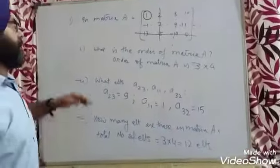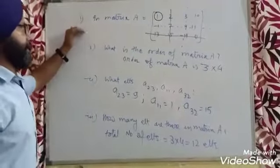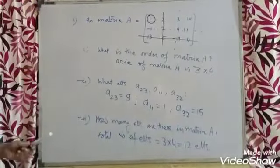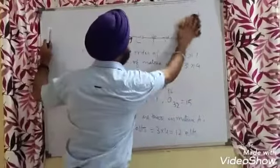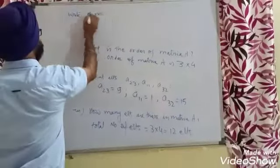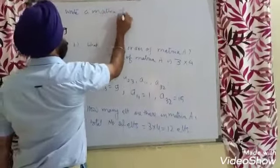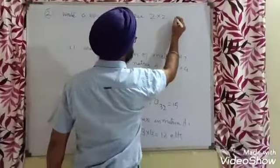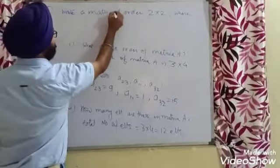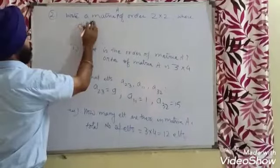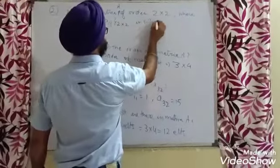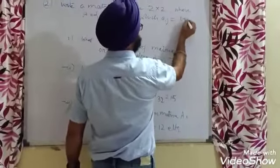With this, we have a simple idea of elements, their position, and the order of the matrix. Now let us see the second example: construct a matrix of order 2 by 2, where AIJ is defined as (I + J) / 2.